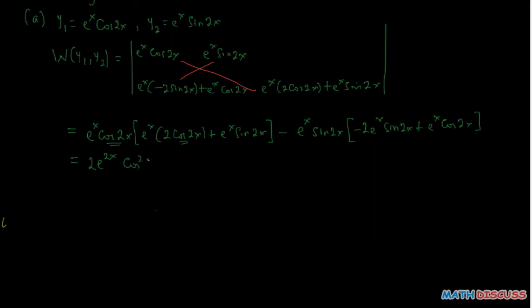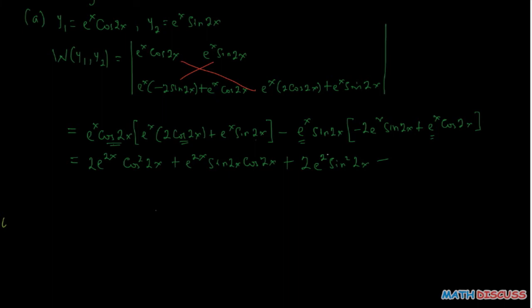So we have 2e to the power 2x cosine squared of 2x, then plus e to the power 2x cosine 2x sine 2x — that gives us sine 2x cosine 2x. Then since minus times minus gives us plus, we have 2 times e to the power 2x times sine 2x cosine 2x. When we observe the cross terms — the sine 2x cosine 2x terms — they are the same and cancel each other out.